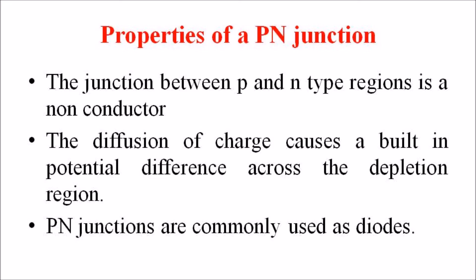A P-doped semiconductor is relatively conductive. The same is true for an N-doped semiconductor, but the junction between P and N-type regions is a non-conducting area or a non-conductor. This non-conducting layer is called the depletion layer.